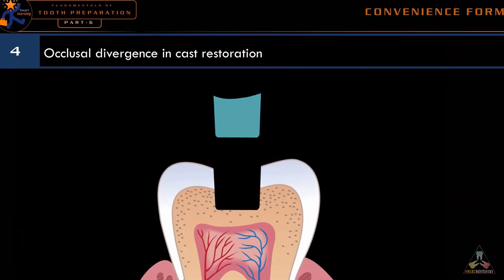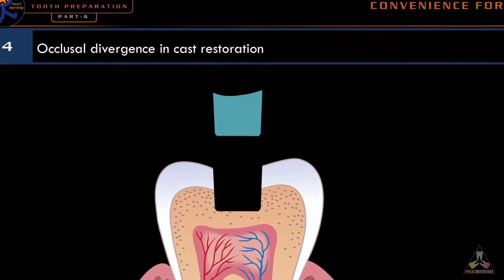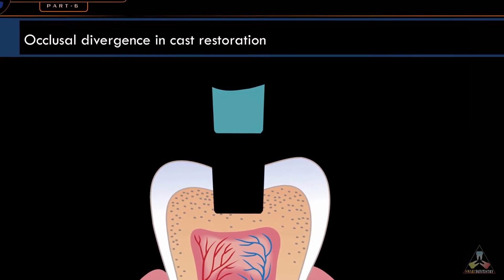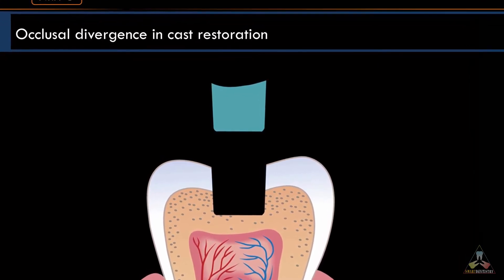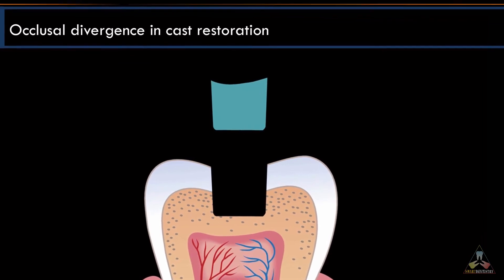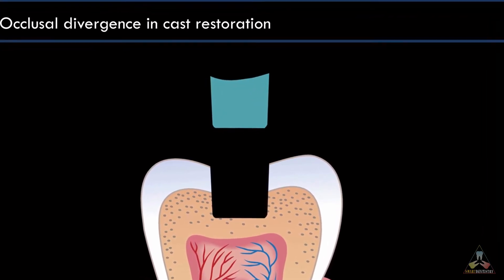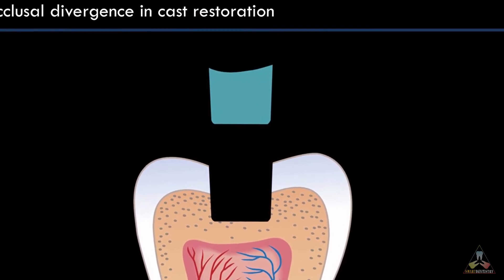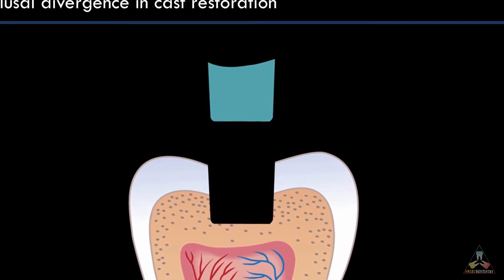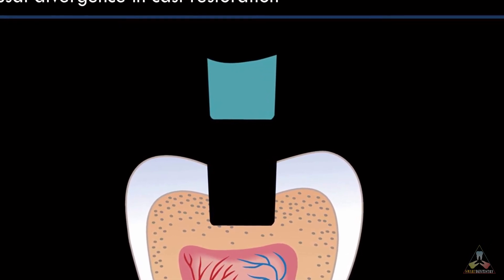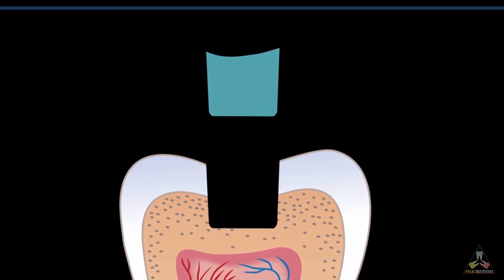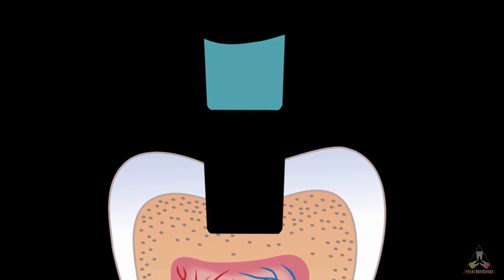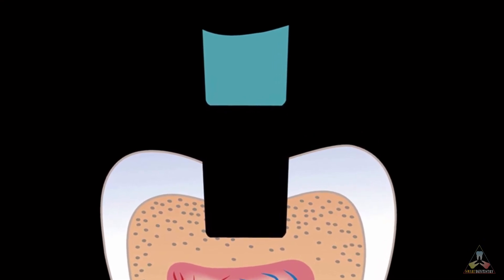We all know that occlusal divergence is mandatory for cast metal restoration, but have we ever wondered why we should give this occlusal divergence? Preferably a parallel wall is more ideal, which would provide more retention and also conserve the tooth structure. But it would be difficult or sometimes impossible to fit a metal casting if such a parallel preparation is made. So, in order to conveniently insert the casting inside the tooth, occlusal divergence is given. Thus, occlusal divergence in cast metal restoration is a convenience feature.